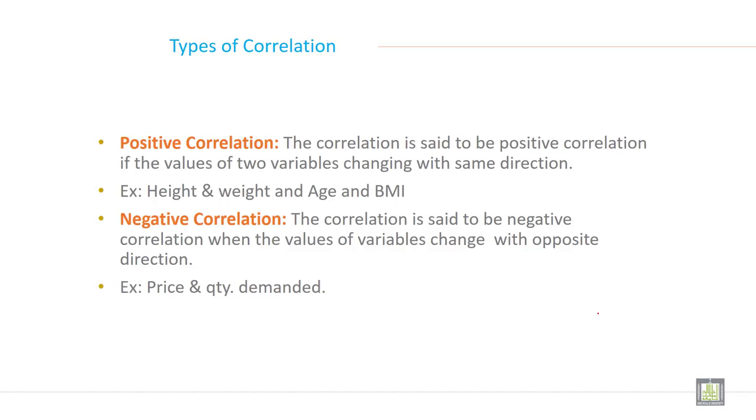What is positive correlation? The correlation is said to be positive if the values of two variables change in the same direction. Examples: height and weight, and age and BMI. If you see height and weight, both are changing in the same direction. If height is increasing, weight is also increasing. And if age is increasing, BMI is also increasing.